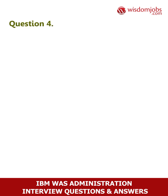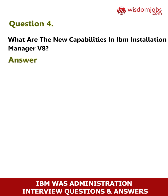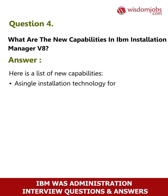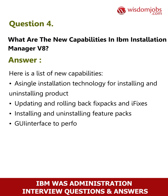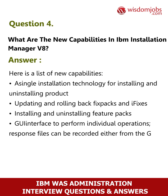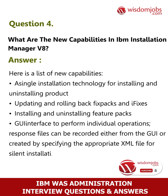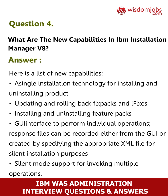Question 4: What are the new capabilities in IBM Installation Manager v8? Answer: Here is a list of new capabilities: a single installation technology for installing and uninstalling products, updating and rolling back fix packs and iFixes, installing and uninstalling feature packs, GUI interface to perform individual operations, response files that can be recorded either from the GUI or created by specifying the appropriate XML file for silent installation purposes, and silent mode support for invoking multiple operations.